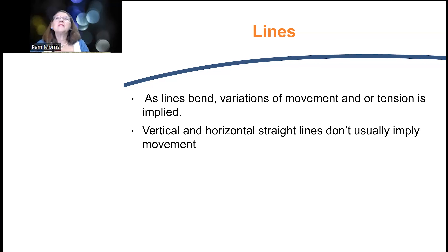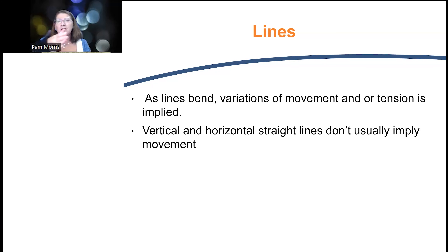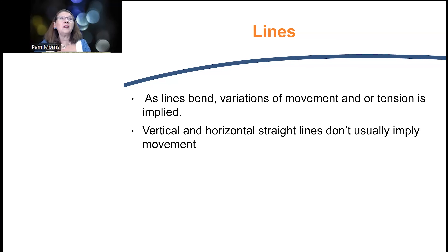Vertical and horizontal lines imply stability, while other lines can imply movement. We've often seen that in car racing, where the camera follows the car and you can see the streaks behind it — those lines communicate to the viewer that there is movement.